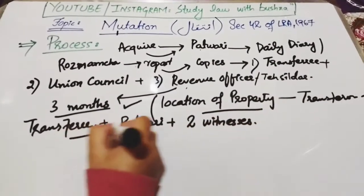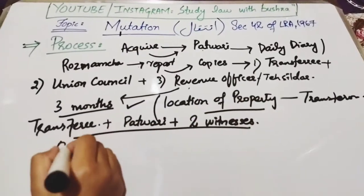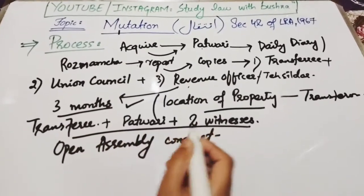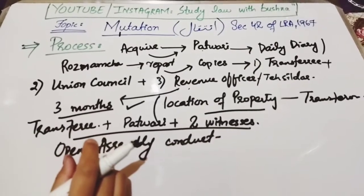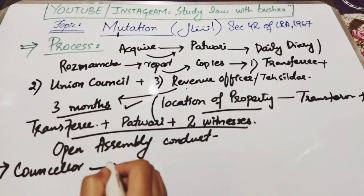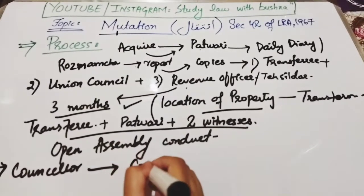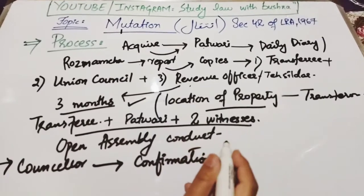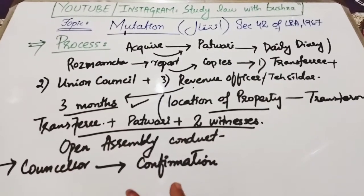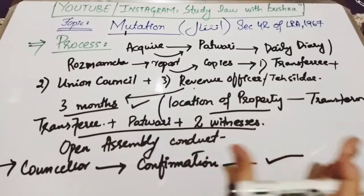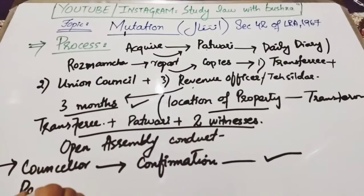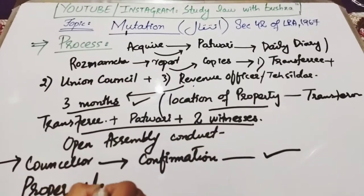An open assembly will be conducted at the property site. The counselor of that area or any respected member will identify and confirm the members and witnesses present and give testimony on their behalf. After that, a proper order will be issued by the tehsildar or revenue officer. As soon as the order is issued, the property is transferred in the name of the transferee.